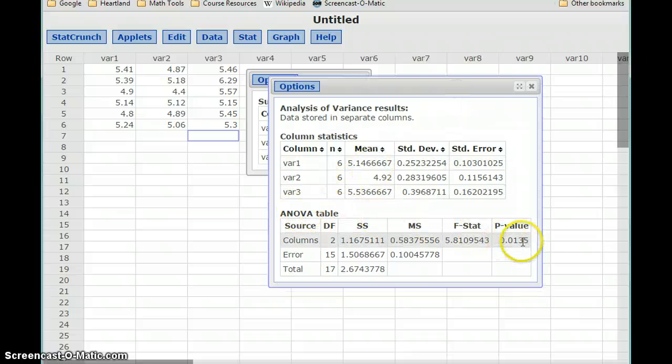In the ANOVA table, on the very right-hand column here, we'll get our p-value of 0.0135.